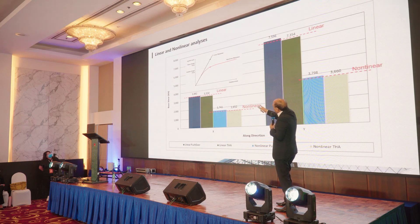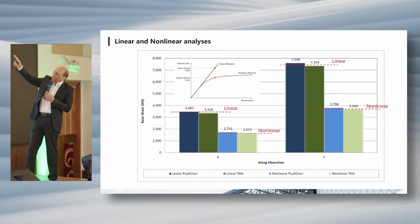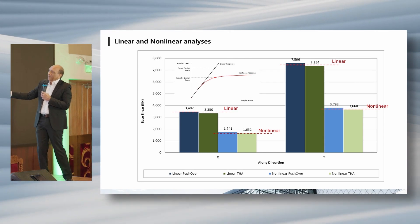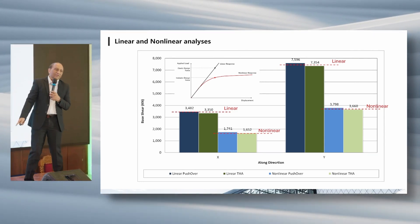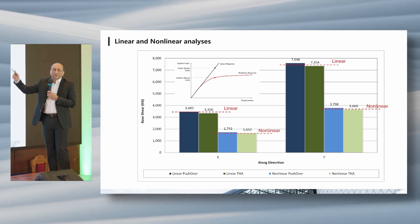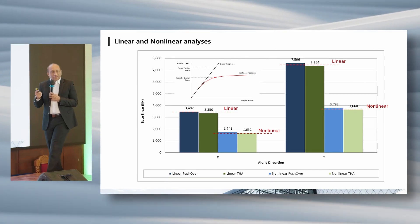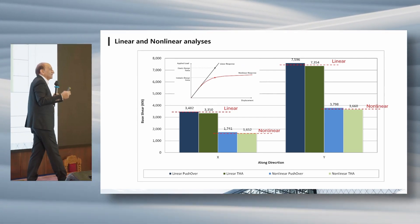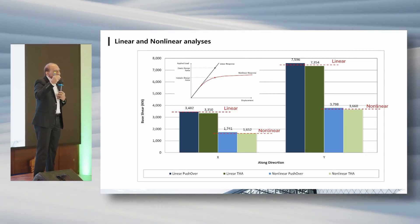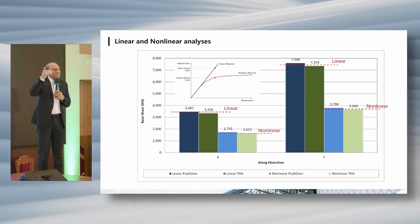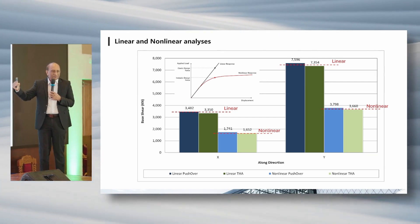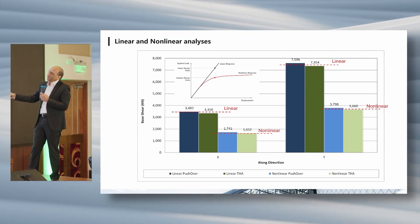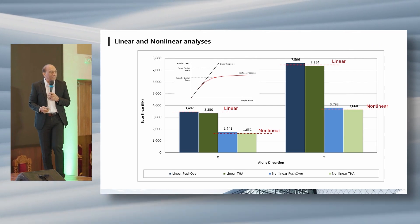We can compare the linear and non-linear reduction in demand in both X and Y directions. We also run the linear time history now that the data is available — we input the ground motion matching with the response spectrum and run it. So we can now compare: linear response spectrum, linear pushover, linear time history, non-linear pushover, and non-linear time history — capturing the full non-linear reduction in the bridge.